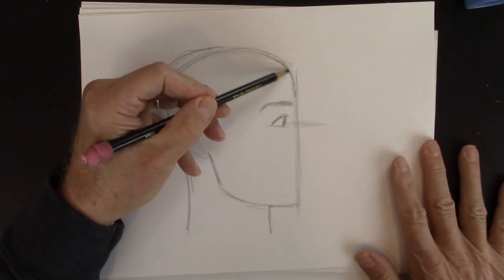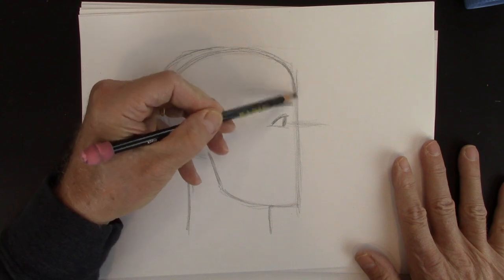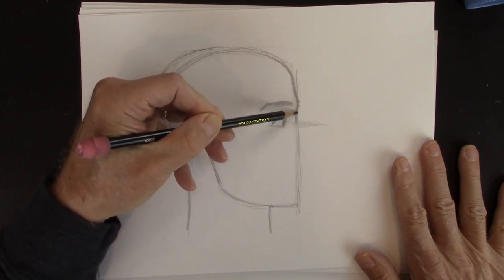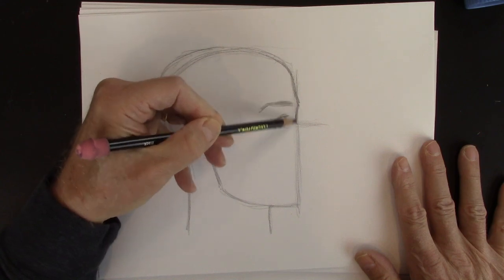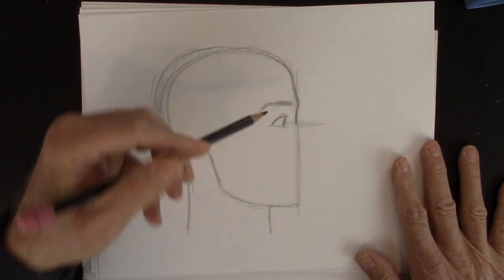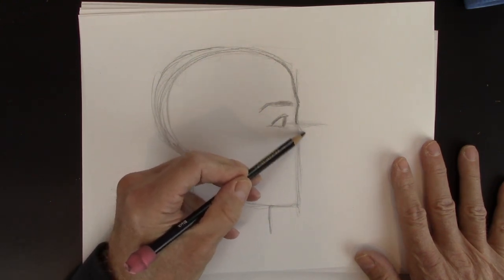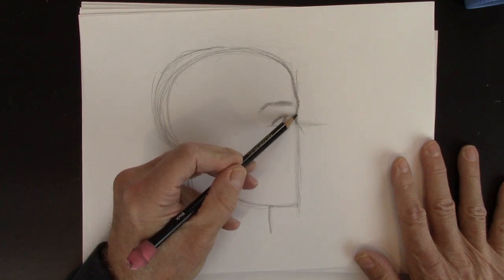Now watch what we do here. This forehead slopes outward. It slopes a little outward and then comes in like this, right here at the eye. You can see that on yourself. It's not just straight down or straight this way. The bridge of the nose is right where the eye is. That's the bridge of the nose, right here. Maybe even a little above.